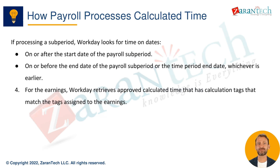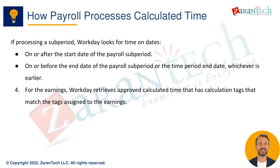Here are some best practices for payroll administrators. Before each payroll, use the run retro pay calculation task to process prior period corrections. When paying time on a lag, run payroll when the time period is locked to prevent time entry. Users with security can change the lock date if more time is needed. Recalculate payroll as needed using the run pay calculation task.